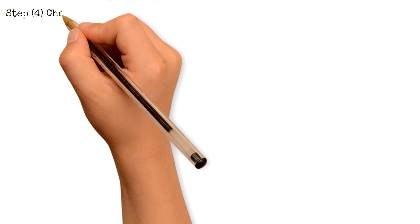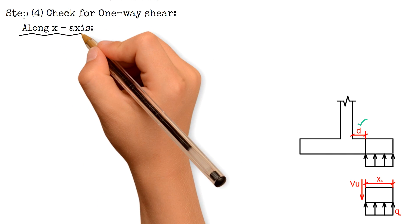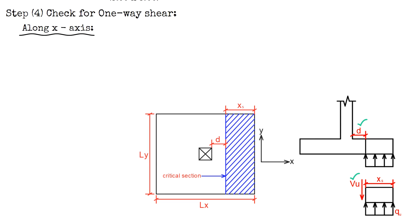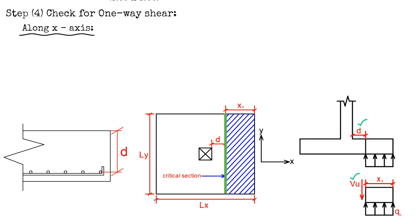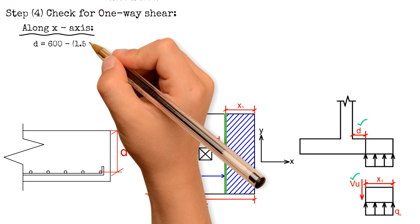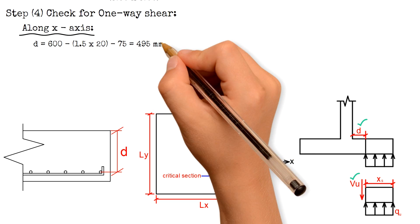The fourth step is to check if the section is safe for one-way shear. The critical section is located at distance D from the face of the column. For the x-axis direction, we calculate the effective depth D along x-axis: thickness 600 mm minus 1.5 times the diameter (20 mm) minus concrete cover (75 mm), giving D = 495 mm. Then x_s equals L_x minus (L_x/2 + 0.5 × C_x + D), giving 1,030 mm.